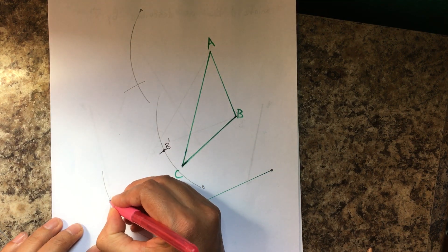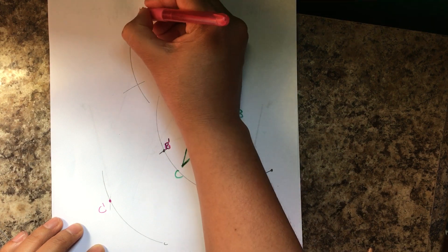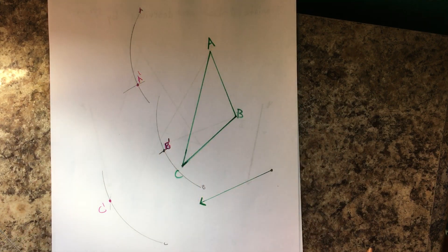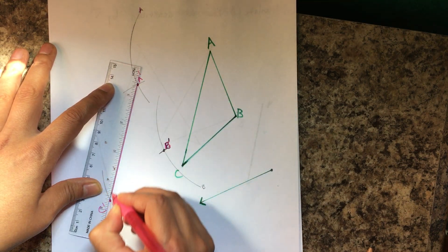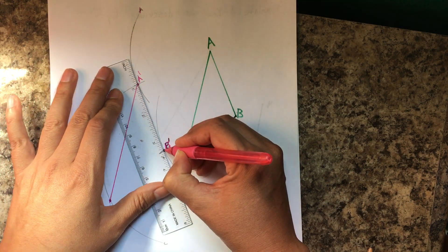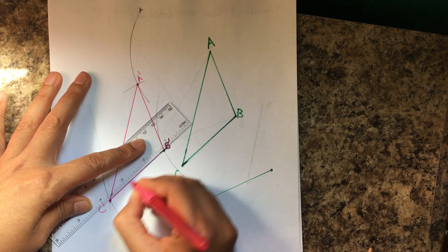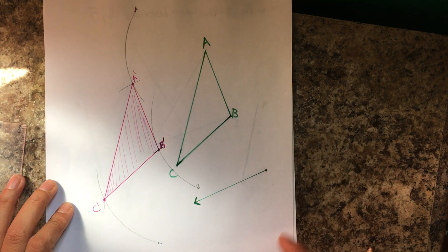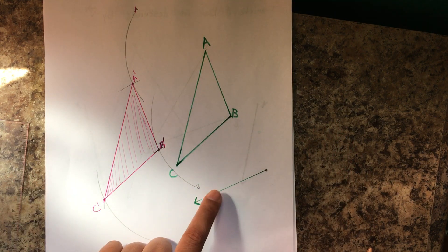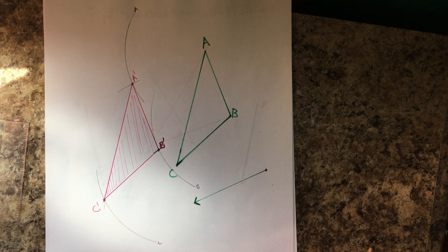I've found the three points of intersection: this is C prime, this is B prime, and right here is A prime. Now I connect those points — C connects with C, B connects with B, and B connects with C — and this is the new position of triangle ABC as described by this vector, telling me to move it that way. Now you're able to do 10.5. Hope you have fun, bye!